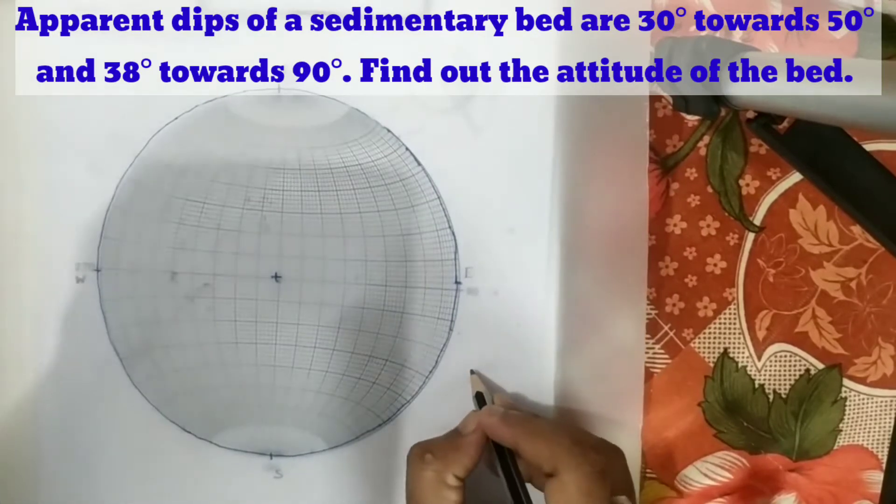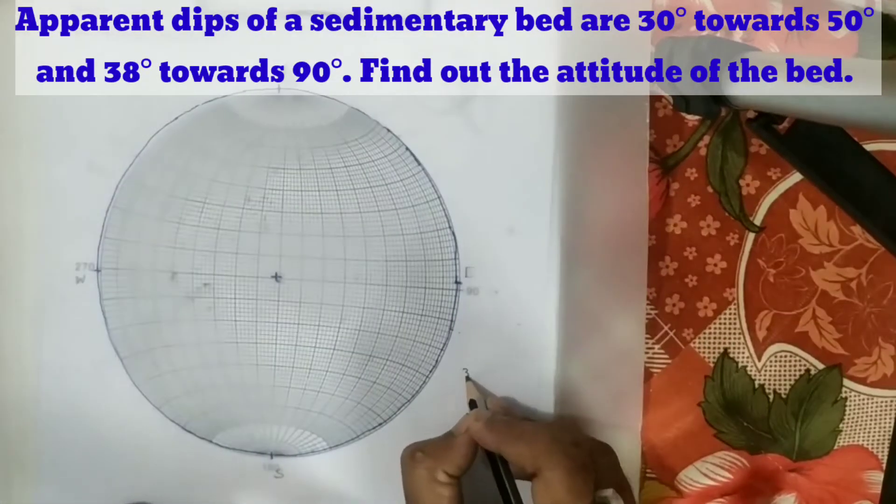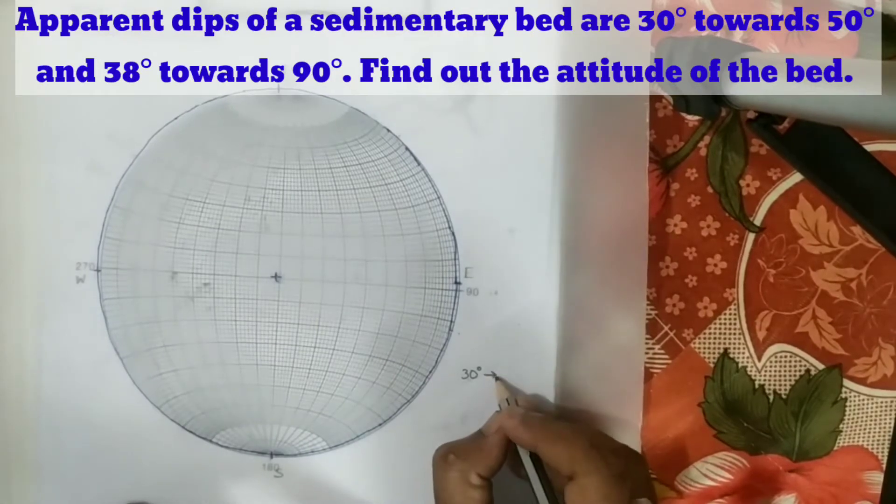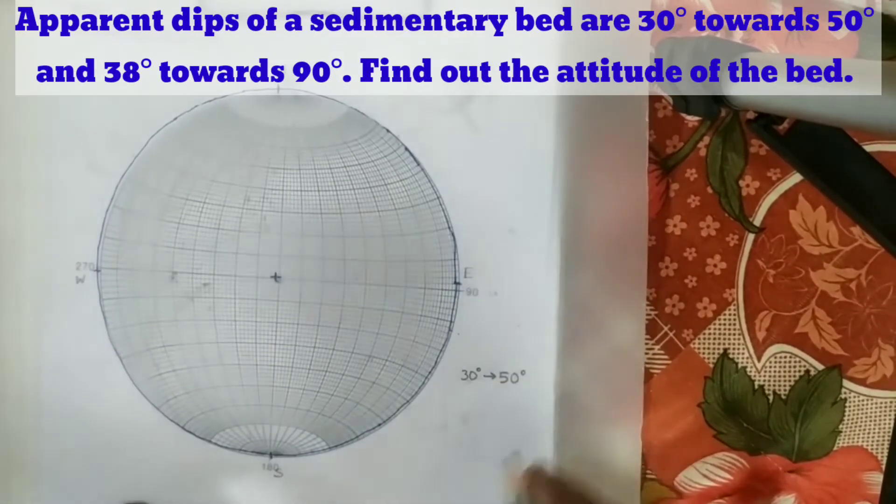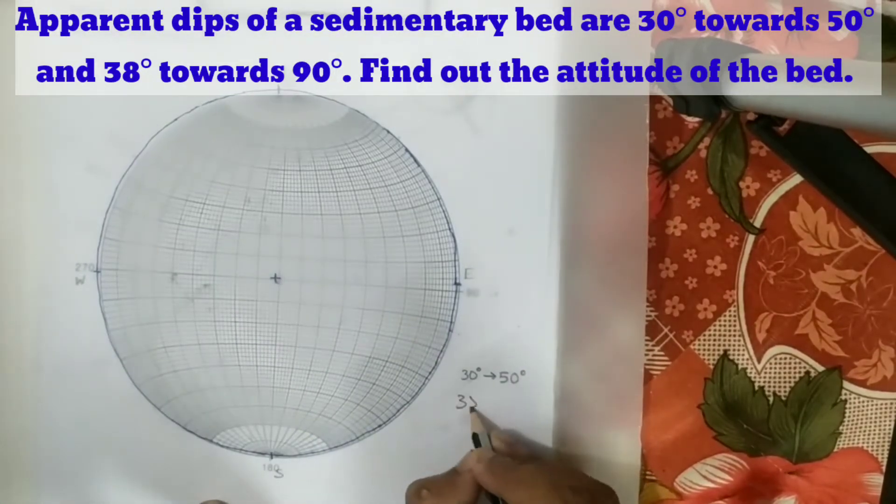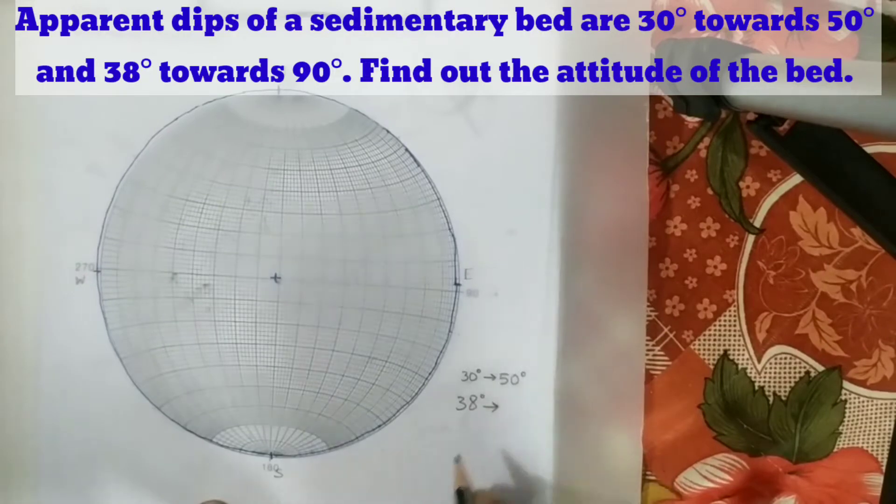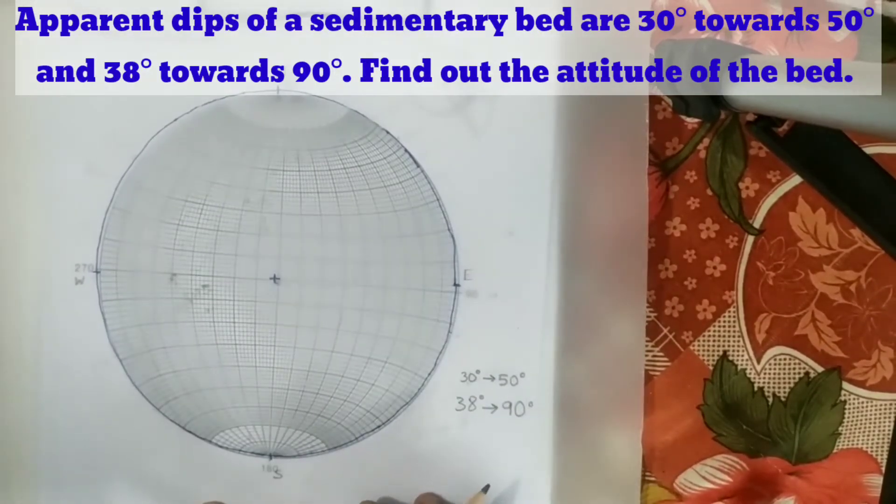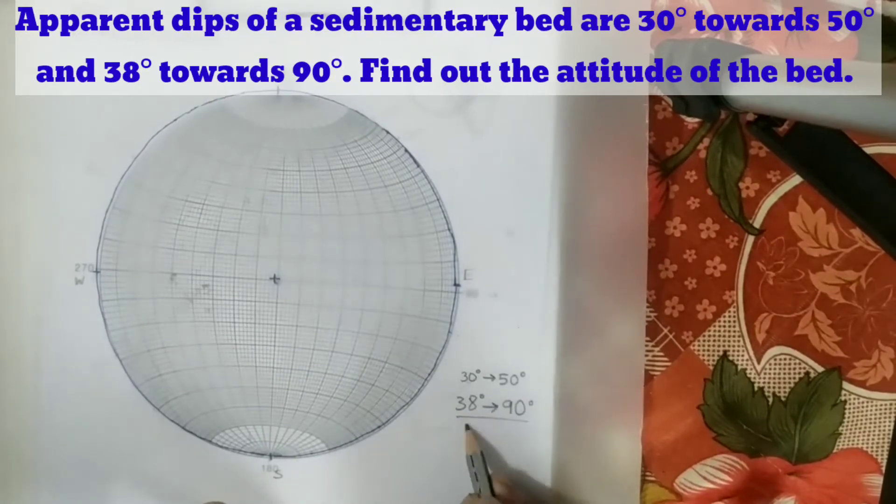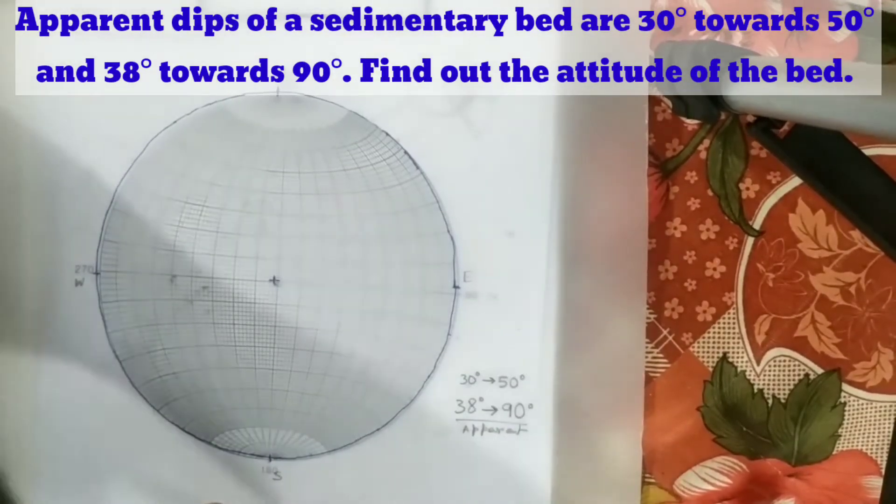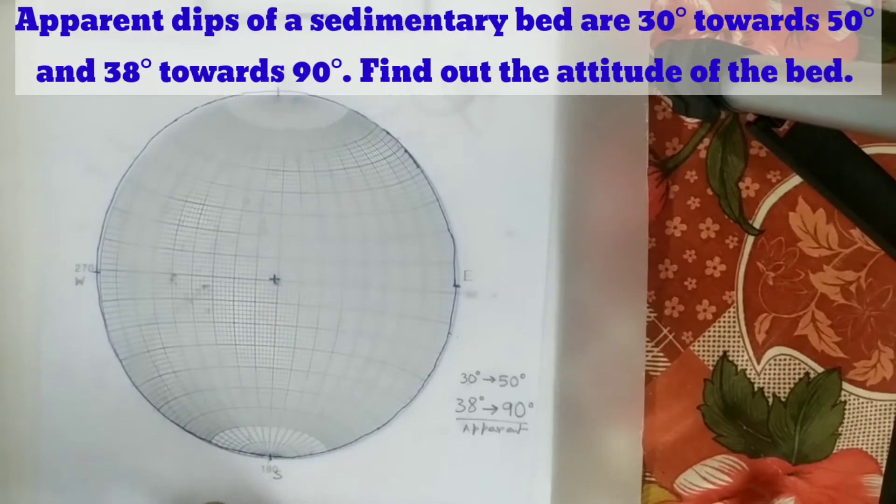apparent dips - one is 30 degrees towards 50 degrees, and the next is 38 degrees towards east or 90 degrees. These are the two apparent dips. We have to find out the attitude of the bed.